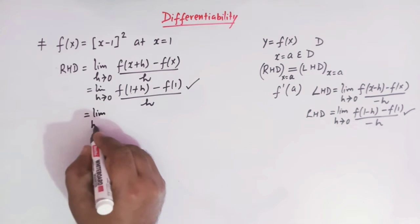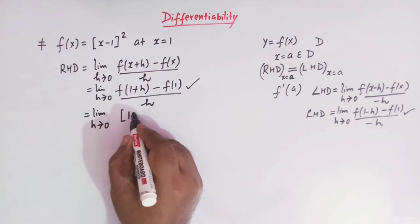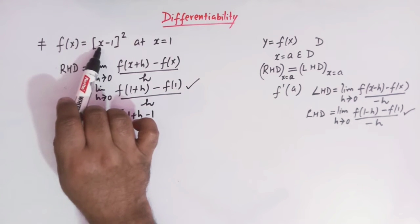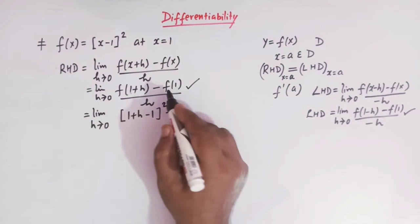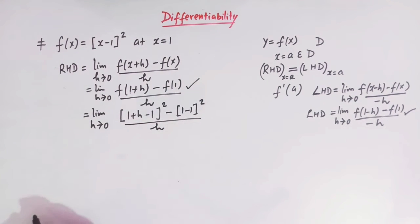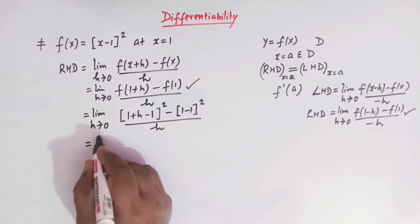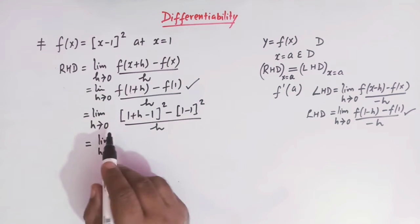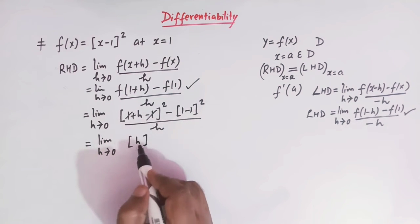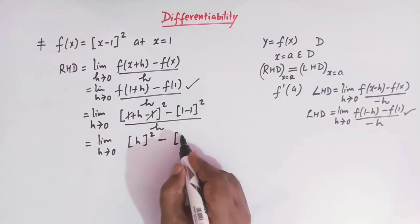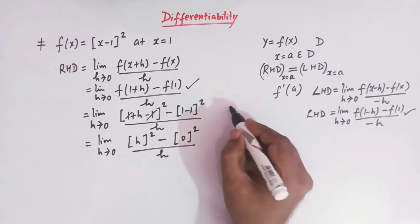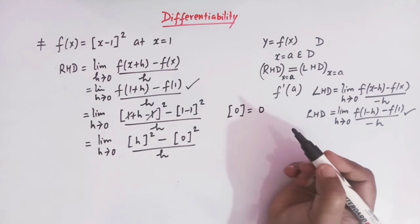For the right hand derivative, we substitute into the function: limit h tends to 0 of [greatest integer of (1+h-1)]² - [greatest integer of (1-1)]² all divided by h. Here 1 and 1 cancel, so we are left with: limit h tends to 0 of [greatest integer of h]² minus [greatest integer of 0]² divided by h. The greatest integer of 0 is simply 0.